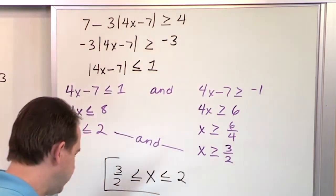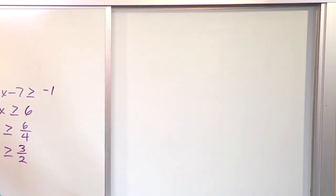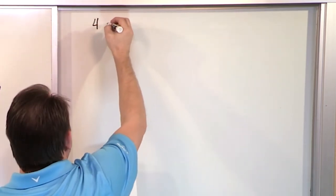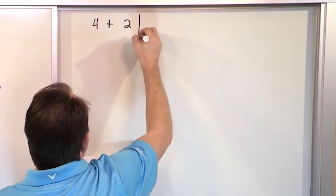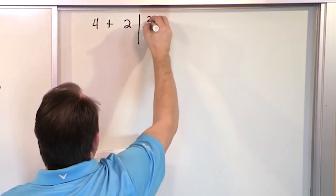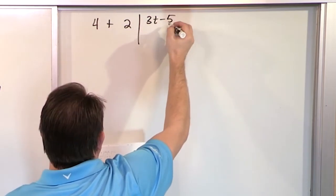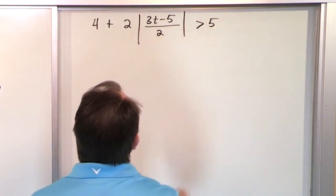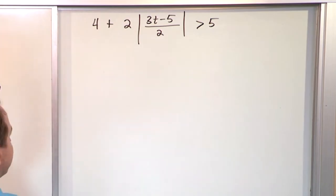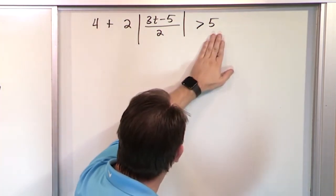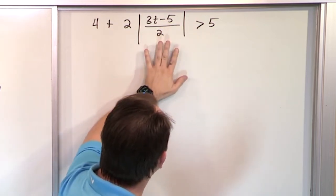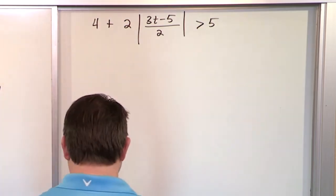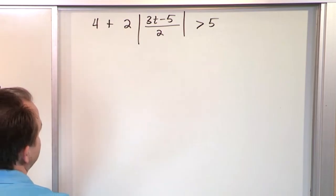Now let's do one where we have an 'or' kind of arrangement, slightly more complicated. What if we have 4 plus 2 times the absolute value of — inside here we have something gnarly: 3t minus 5, all divided by 2 — and that's greater than 5. But the same exact process applies: first get rid of the 4, then get rid of the 2 so that we have only the absolute value on one side, and then decide if it's an 'and' or an 'or.'